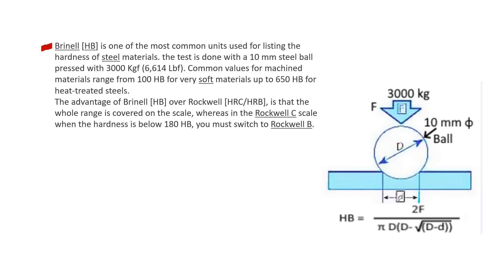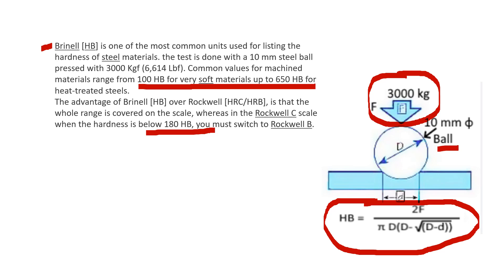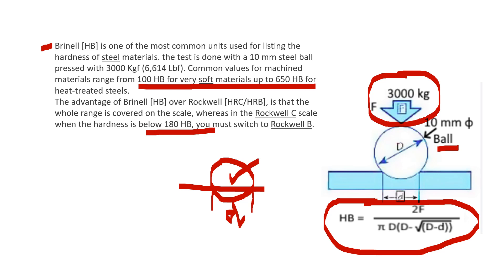After Rockwell, we have Brinell. The Brinell hardness test has a range of 100 HB to 650 HB, making it more popular than Rockwell which only goes up to about 180 HB. The pressure used in Brinell is 3000 kg force and the ball diameter is 10 mm. The formula is: HB = 2F / (π × D × (D − √(D² − d²))), where capital D is the ball diameter (10 mm), small d is the impression diameter, and F is the force (3000 kg).